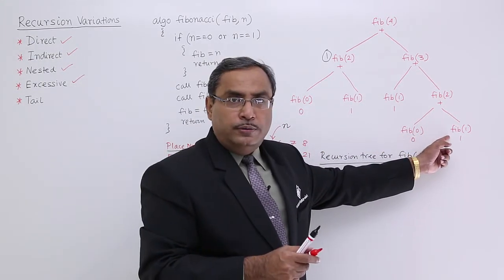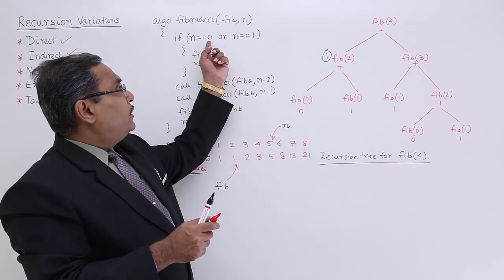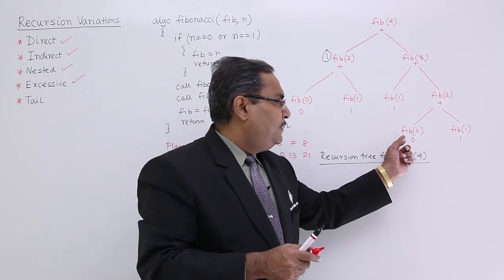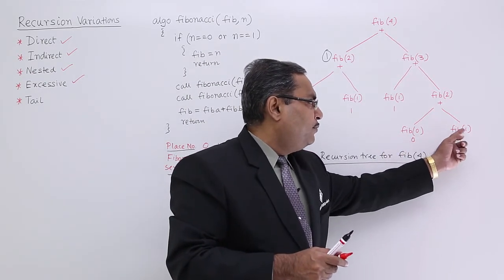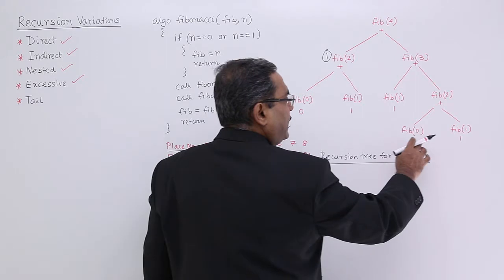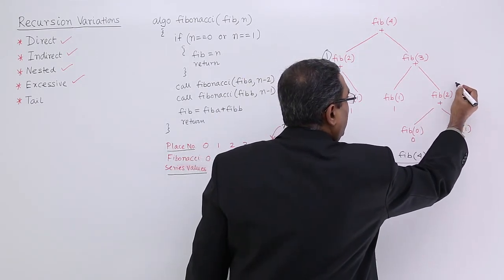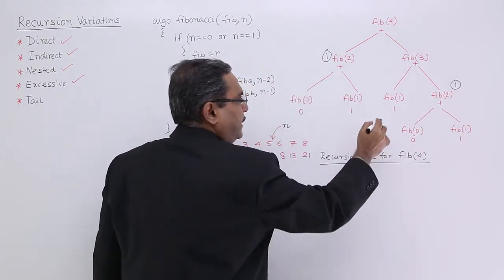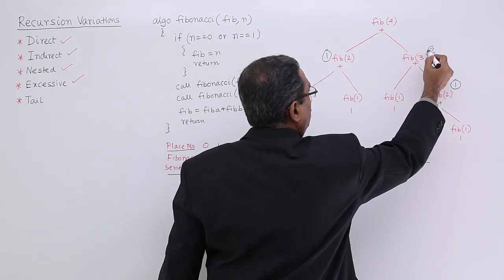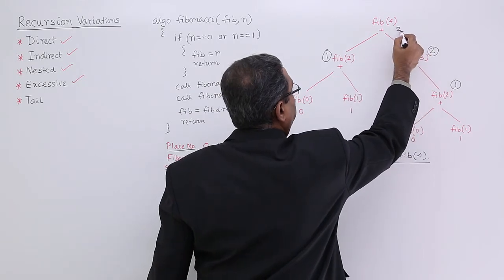Fib(1) will match the condition n equal to 1, so Fib will be equal to n, giving the value 1. Now for Fib(2), 2 does not match the base conditions, so it will call Fib(0) and Fib(1). For n equal to 0 or n equal to 1, Fib is equal to n. So for Fib(0) I get 0, and for Fib(1) I get 1. Adding them gives 1. So this 1 and the other 1 add up to give 2 for Fib(3).